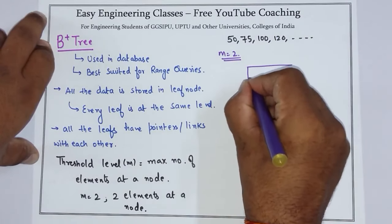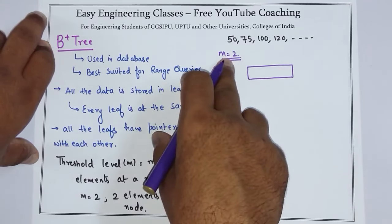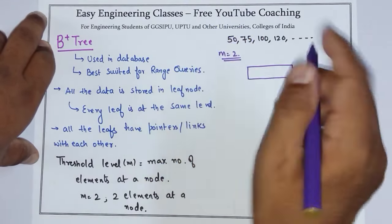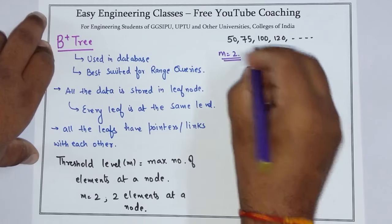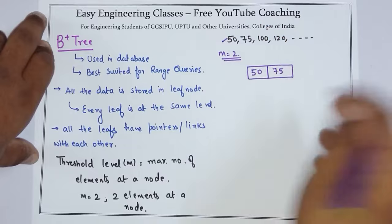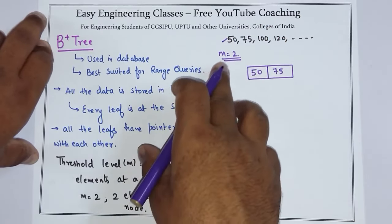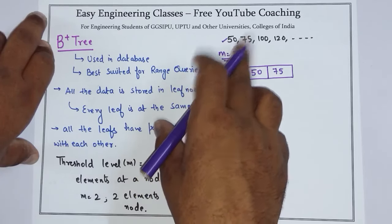The root node will have two elements. 50 comes, so you can place 50 here. Then 75 comes. You can place 75 here because at most a leaf node contains m number of elements, and m is 2.